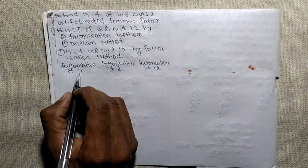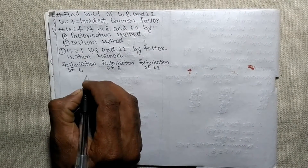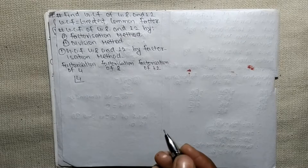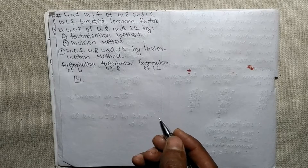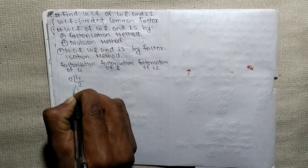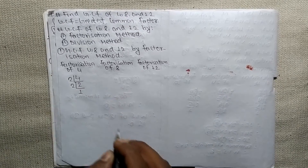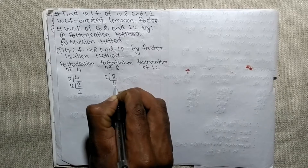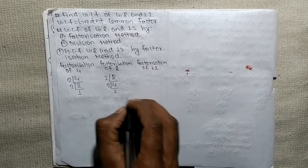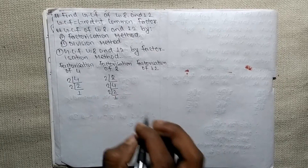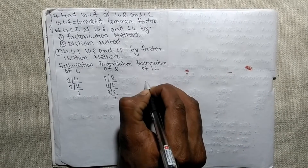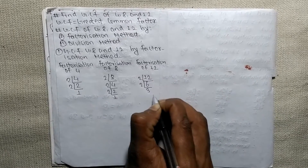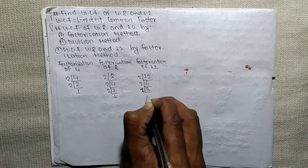Now we find the prime factors of each number. While finding prime factors, we choose the lowest number which can exactly divide the given number. So 4 = 2 × 2. For 8, it is 2 × 4, and 2 × 2, so 8 = 2 × 2 × 2. For 12, it is 2 × 6, and 2 × 3, so 12 = 2 × 2 × 3.